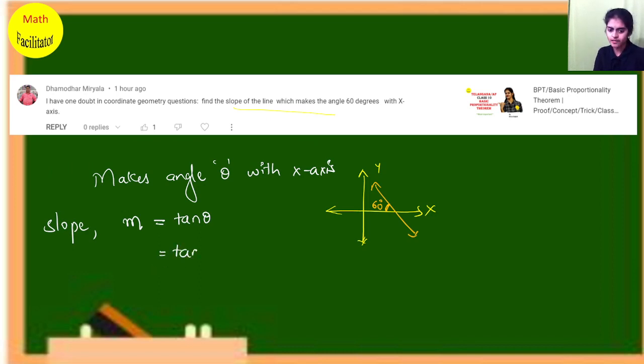So simply, slope of this line you want, isn't it. So tan of - what is the theta given to you? The angle is 60. So tan 60, what is tan 60? Root 3. So slope of this line is root 3. Is it easy, Damodhar?